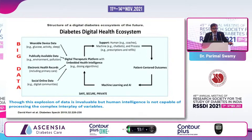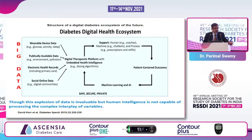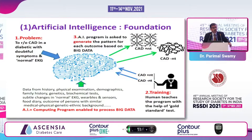The diabetes digital health ecosystem consists of wearable device data, publicly available data like environmental pollution, electronic health records, and the patient's social online data. All these things are a big gold mine into the patient's physical and psychosocial health. But human intelligence is simply not capable of making any intelligent decision based on this complex interplay of variables — because they are multi-fold, in the millions or thousands. So, the role of artificial intelligence.